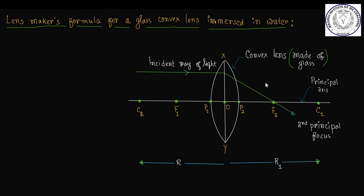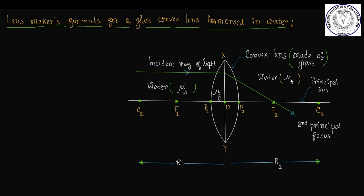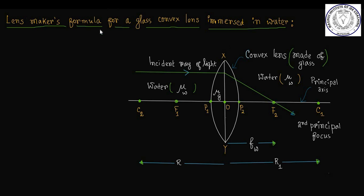Lensmaker's formula for a glass convex lens immersed in water. Here, μg is the refractive index of glass and the convex lens made of glass is immersed in water, so the surrounding medium is water with refractive index μw. We denote the focal length of the convex lens immersed in water as fw.